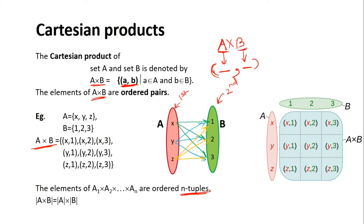Let's revise what is the Cartesian product. The Cartesian product of set A and B is denoted by A cross B, and it is a collection of ordered pairs of set A and set B. It is denoted as (a, b), where the first element comes from the first set and the second element comes from the second set.